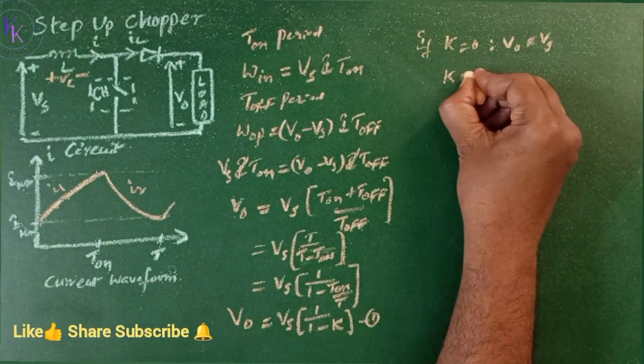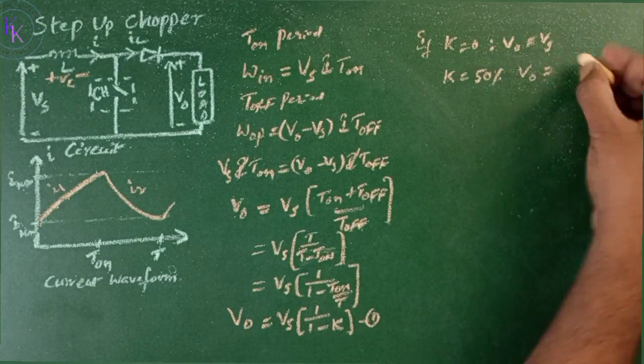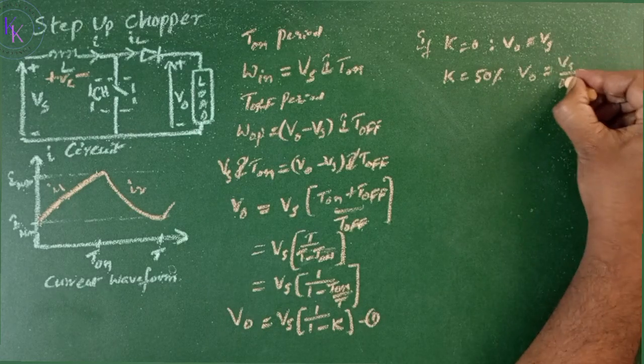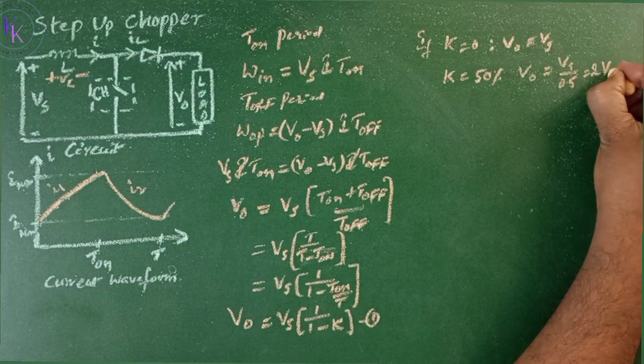If K equals 50 percent, then V0 equals Vs divided by 0.5, which is nothing but 2 times Vs.